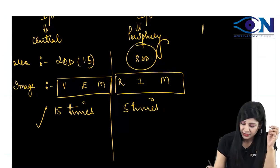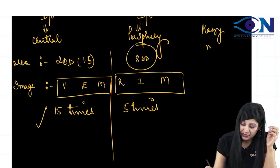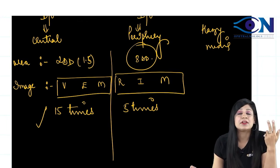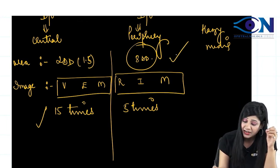So, if it is a hazy media, suppose, hazy media means we can have the aqueous turbidity, we can have vitritis, we can have cataract. So, obviously, I require a larger area.